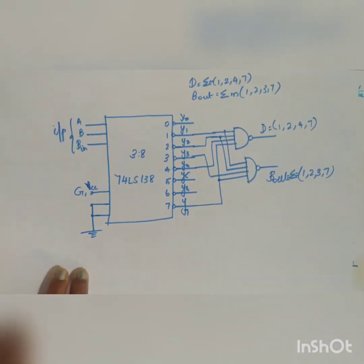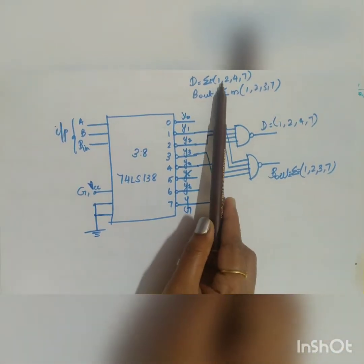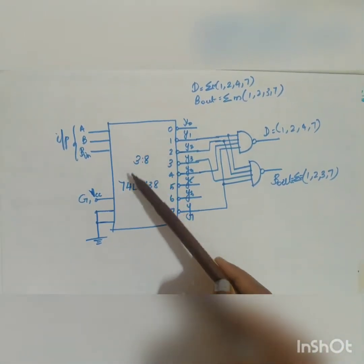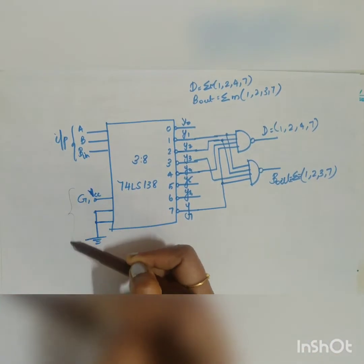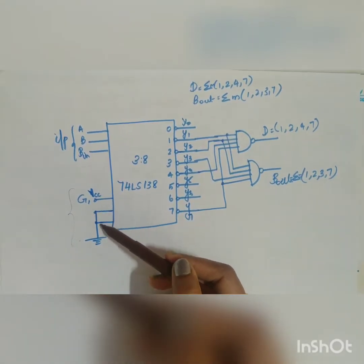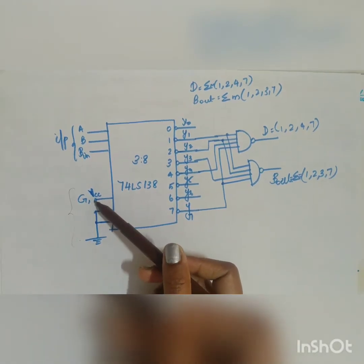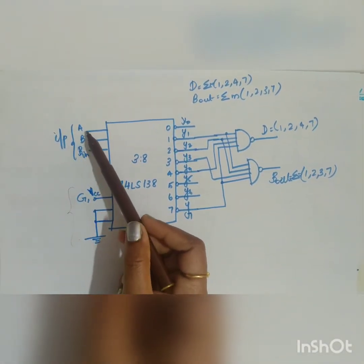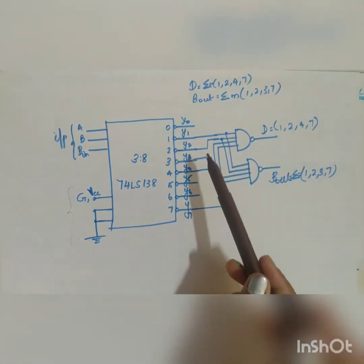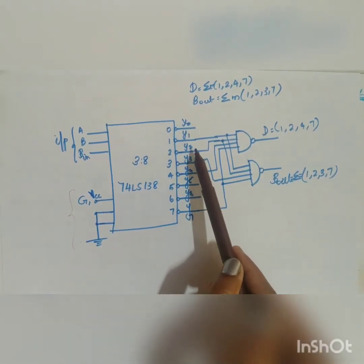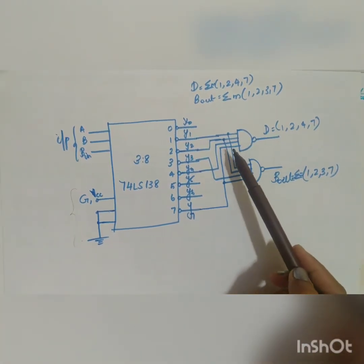The 74LS138 3-to-8 decoder is used with enable inputs: G1 connected to VCC (high), and G2A-bar and G2B-bar connected to ground (low). The three input combinations A, B, and Borrow-in are applied to give 8 outputs Y0 through Y7.